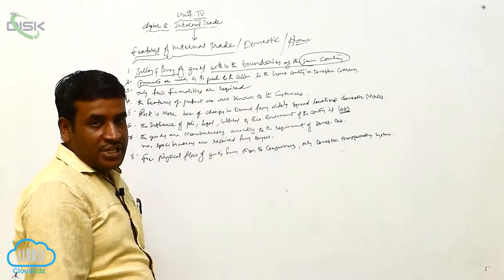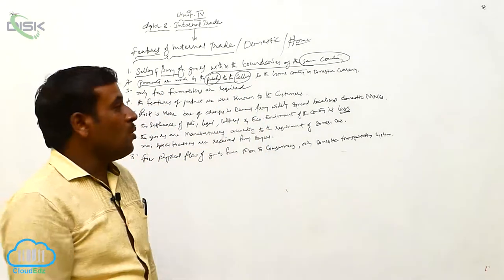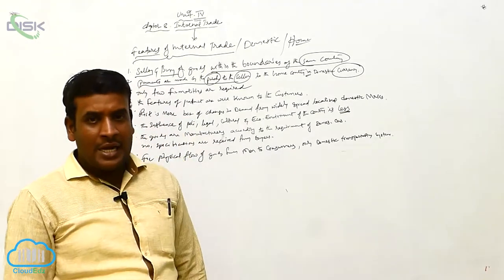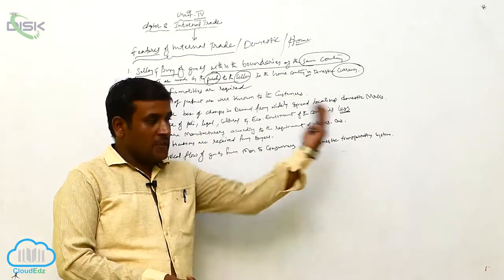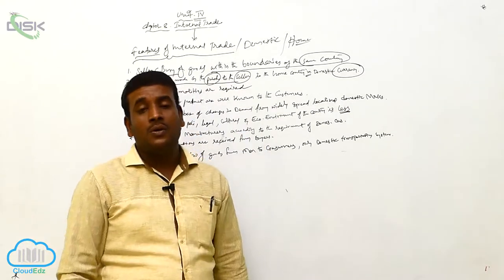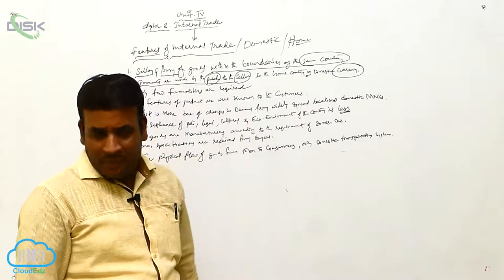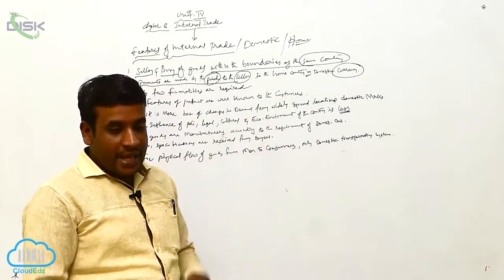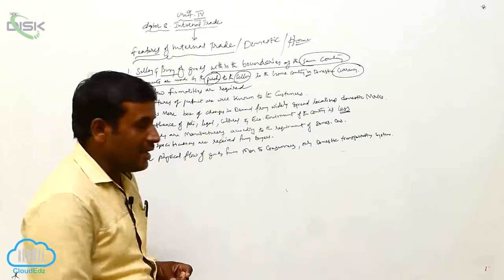The first feature of internal trade: the buying and selling of goods and services takes place within the boundaries of a single nation or same country. The second feature: payments are made by the purchaser to the seller in the home country in domestic currency only. There is only one currency relating to that country. There is no involvement of other country currencies at all.